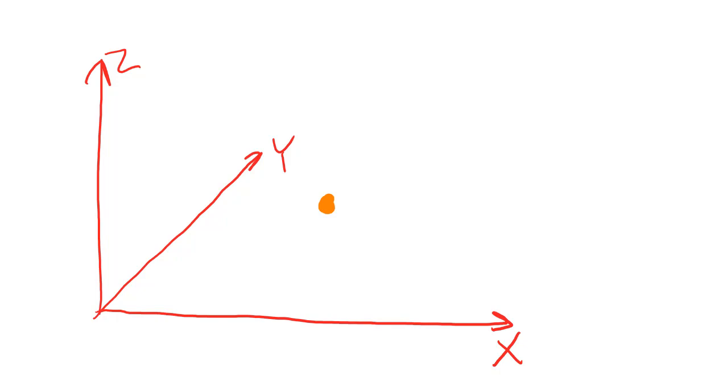For example, suppose I have a Cartesian coordinate system like this. And suppose I want to express the location of this point here. I would express the position of this point by giving the x, y, z coordinates.